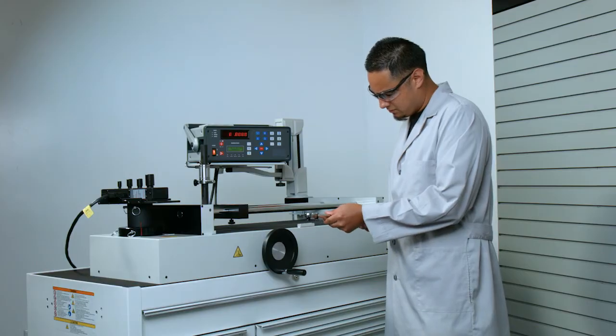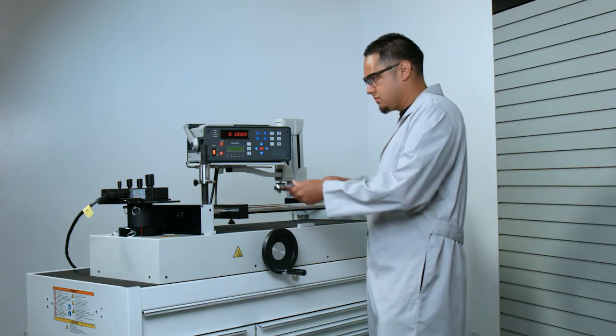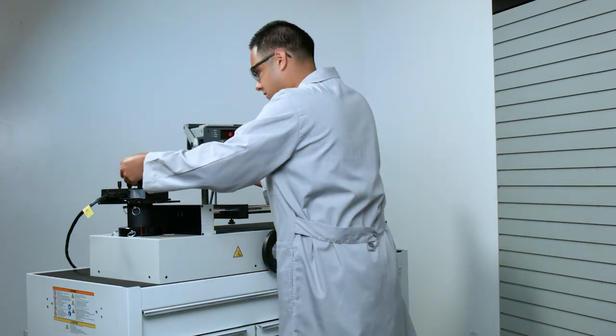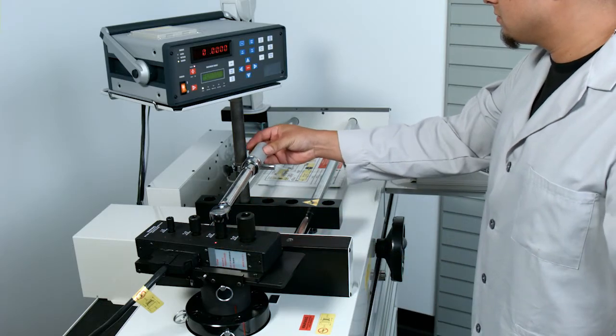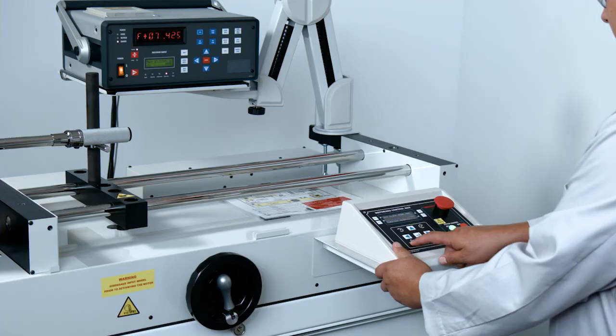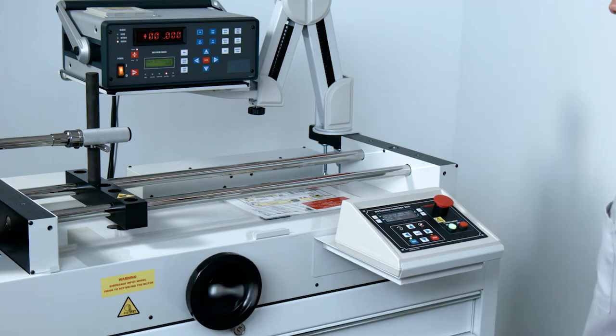A torque wrench, set at a specific value, is placed in the calibrator with the handle held stationary. The square drive is placed into the transducer with the handle held stationary. The motor automatically rotates the transducer until the wrench reaches its set point.